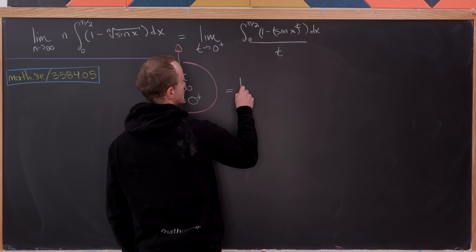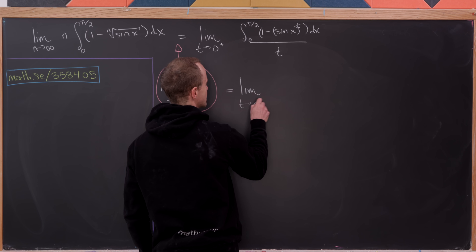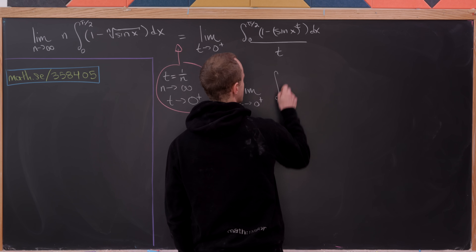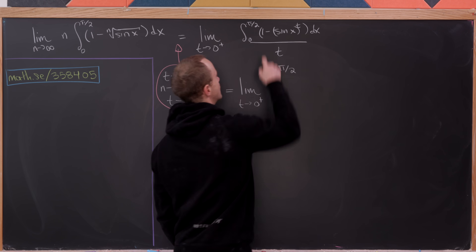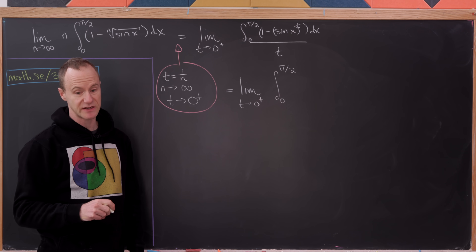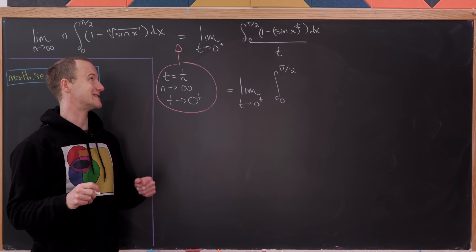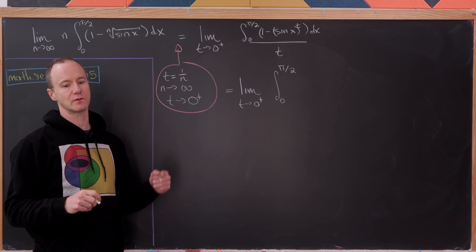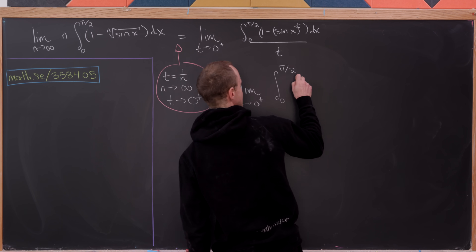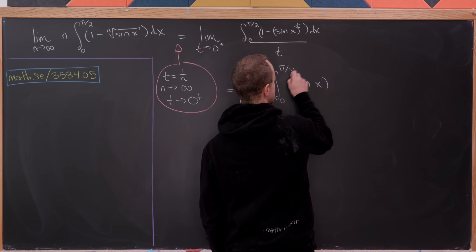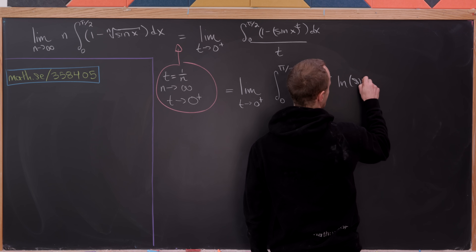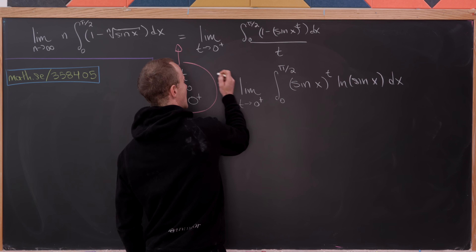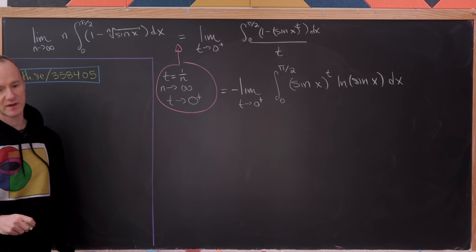Applying L'Hôpital's rule, we have this limit as t goes to 0 from above. The denominator differentiates to 1, so I'll leave that off. Then we have our integral from 0 to π/2 — the derivative of 1 is 0 — and taking the derivative with respect to t of sin(x)^t gives us sin(x)^t times the natural log of sin(x) dx. This is attached to a minus sign, which I'll bring in front of the whole limit.